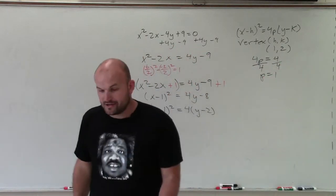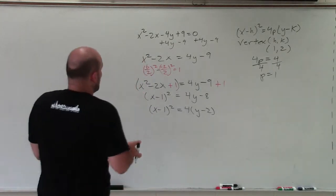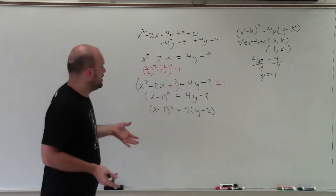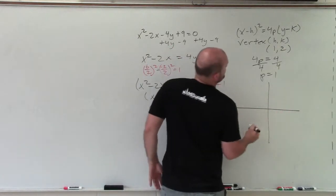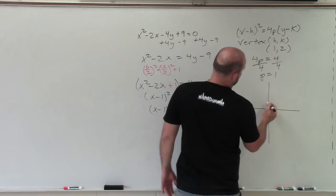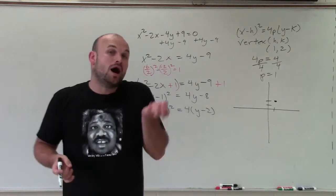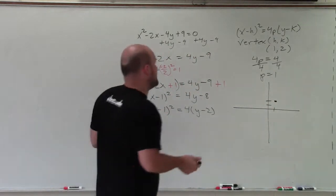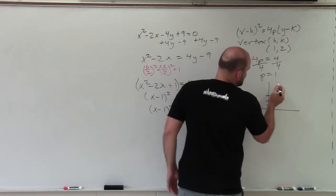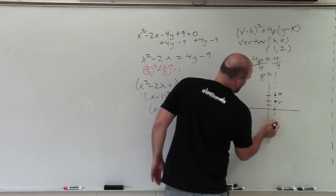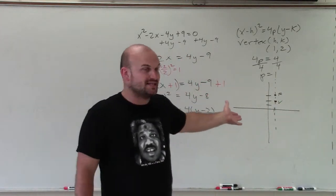Now I know that the value of p is a positive 1. I know the graph opens up, and it has a vertex at 1 comma 2. So let's graph it — I go over 1, up 2. Since p is positive, that means I'm going to go up 1 to find my focus. The vertex and the focus all lie on the axis of symmetry, which is at x equals 1.